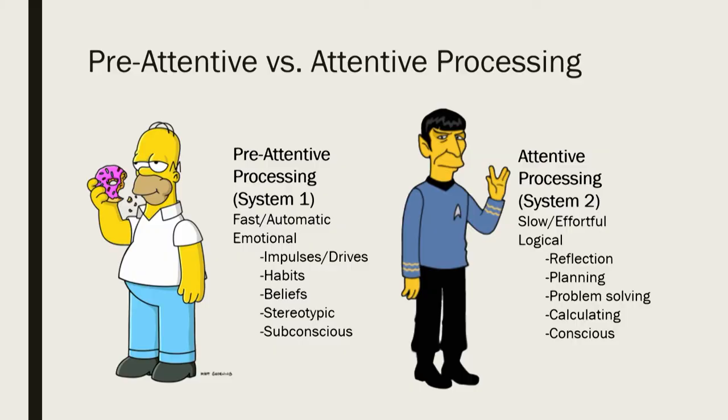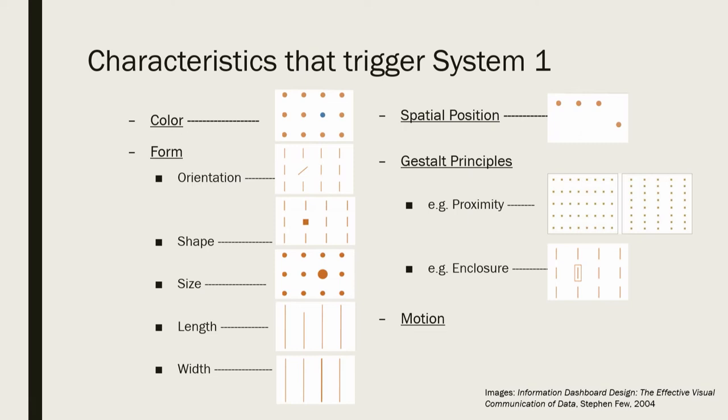On the other hand, we have attentive processing — it's much more deliberate, the conscious interpretation of stimuli, done in serial sequence, much slower than system one. But it's much more precise and trustworthy as well. When you're creating a data visualization, you're typically operating in system two — you're going through the data, making conscious choices about what to show and how. But we want to make sure that the visualization we ultimately create is taking advantage of system one, activating system one in the end user.